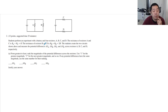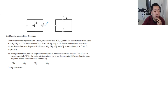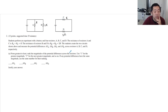Students perform an experiment with a battery and four resistors A, B, C, and D. The resistance of resistors A and C is RA equals RC, so I'm just going to call these R. Resistor B is RB equals 2R, and resistor D is also 2R. The students create two circuits and measure the potential differences ΔVA, ΔVB, ΔVC, and ΔVD across resistors A, B, C, and D. From greatest to least, rank the magnitude of the potential differences. Use one for the greatest magnitude, two for the next greatest, and so on. If any potential differences have the same magnitude, use the same number.